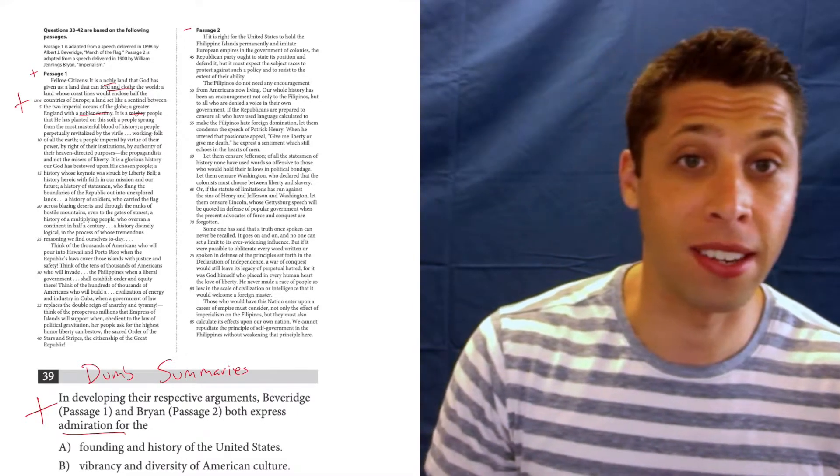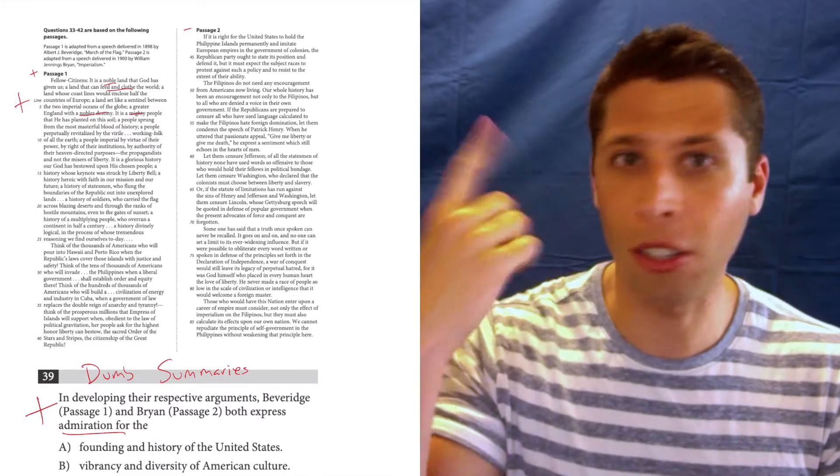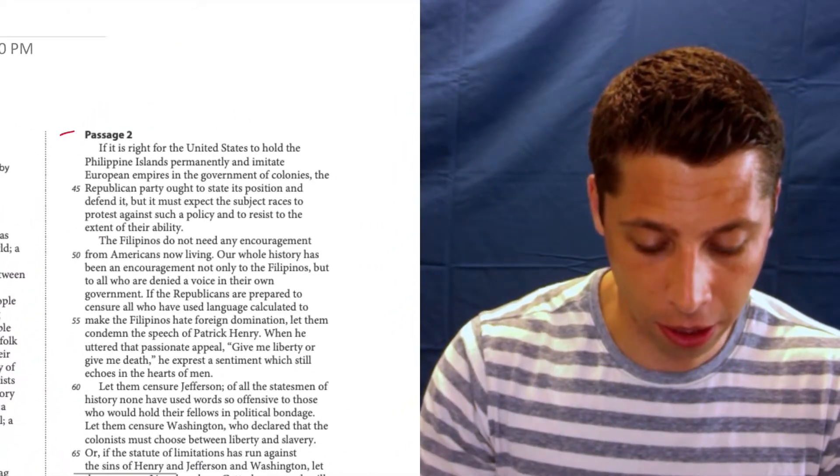So we can kind of put that one aside. It was Bryan in passage two that was a little bit more negative. They're discussing imperialism. Generally speaking, passage one is very pro-imperialism, and generally speaking, passage two is against it. So we need to find something positive in this passage. Now is where we kind of skim, and we just think in terms of connotation.